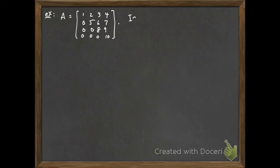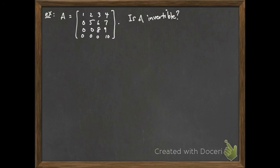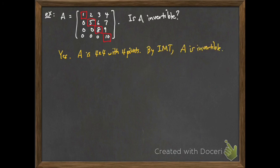Let's look at how this might be used in an example. The basic idea is that the invertible matrix theorem is a collection of logically equivalent statements, so if you're asked to show one thing, it's enough to show one of the other — easier — statements. Suppose you're given a 4 by 4 matrix and asked whether it's invertible. You can notice it's already in echelon form, it has four pivots, and so by the invertible matrix theorem the matrix is invertible.